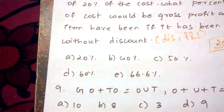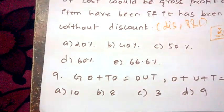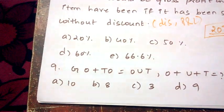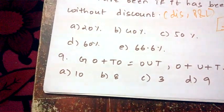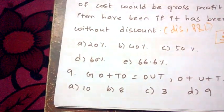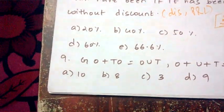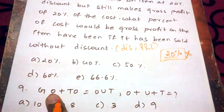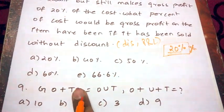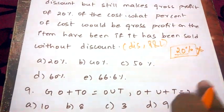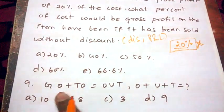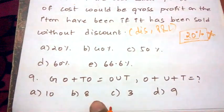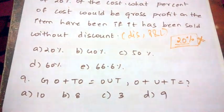The last and most important is the cryptarithmetic problem. You can expect at least one cryptarithmetic problem in every Infosys written test — sometimes two or three. The question format is: GO + TWO = OUT. O + U + T = ? Options: A=10, B=8, C=3, D=9.